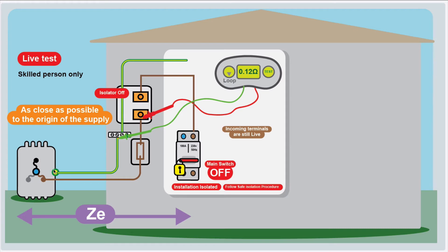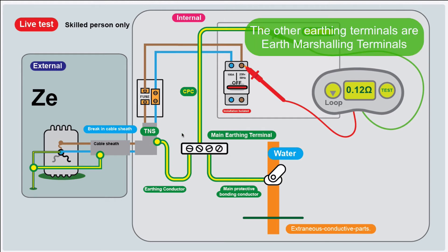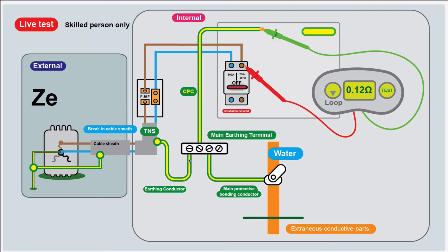We also want to check the earthing conductor because there might be other connections off the main earthing terminal. If there are other connections coming off it, you could be getting parallel paths. If we have an isolator or switch fuse before our consumer unit or distribution board, we take our ZE reading from there. Now let's look at the main earthing terminal. We're going to test between line and earth at the consumer unit — there's no switch fuse beforehand, just a service cutout, so I'm okay to test from here.